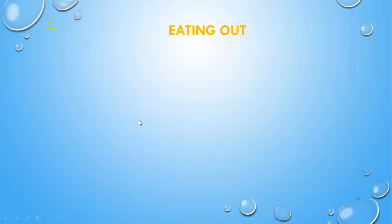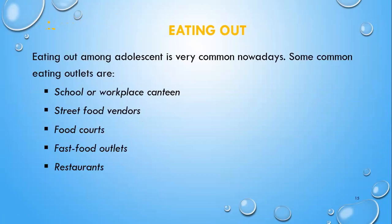After having learnt about food habits and food choices, let's look at some topics on eating out. Eating out among adolescents is very common nowadays. Some common eating outlets are school or workplace canteen, street food vendors, food courts, fast food outlets, and restaurants.